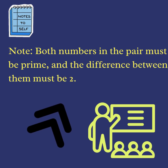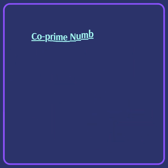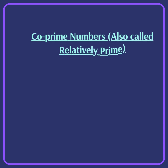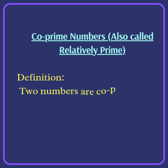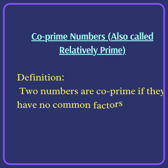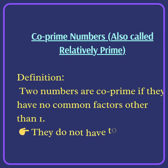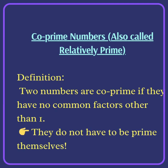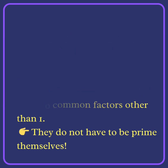Co-prime numbers, also called relatively prime numbers: two numbers are co-prime if they have no common factors other than one. They do not have to be prime numbers themselves.